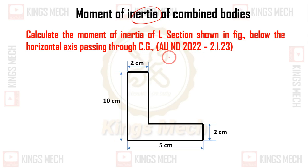This moment of inertia problem was asked in Anna University November-December 2022 exam on 21-01-2023. The question is to calculate the moment of inertia of the L section shown in the figure below the horizontal axis passing through the center of gravity. So we have to find the center of gravity first, x̄ and ȳ, then find the moment of inertia.